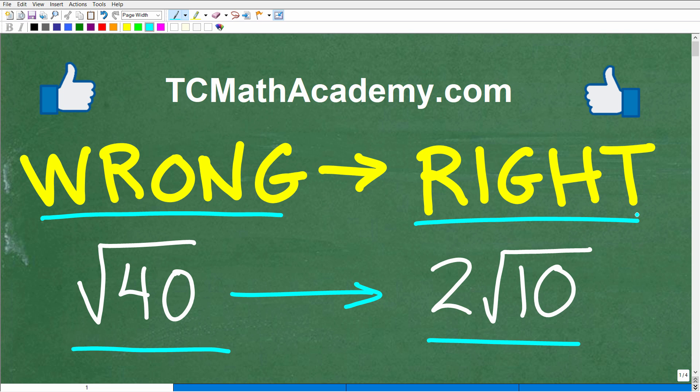But how do we go from here to here? So we're going to be talking about a very specific skill that you need in order to deal with square roots, especially if you're taking a course like algebra. But if you know the reason how we went from the square root of 40 to 2 times the square root of 10, put that into the comment section.